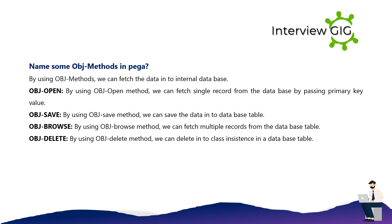Name some OBJ methods in PEGA. By using OBJ methods, we can fetch data into the internal database. OBJ Open: by using the OBJ Open method, we can fetch a single record from the database by passing the primary key value. OBJ Save: by using the OBJ Save method, we can save the data into a database table. OBJ Browse: by using the OBJ Browse method, we can fetch multiple records from the database table. OBJ Delete: by using the OBJ Delete method, we can delete class instances in a database table.